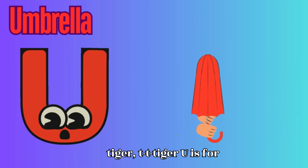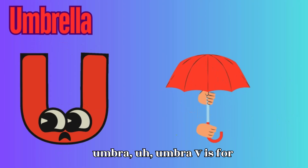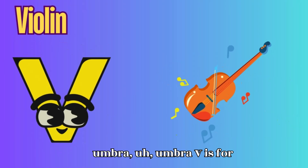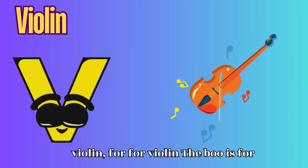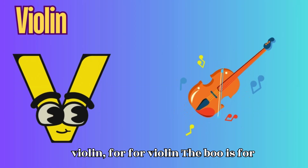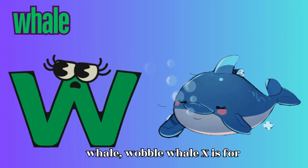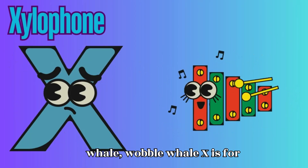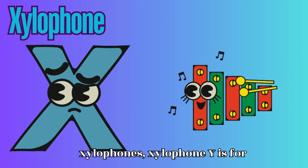T is for Tiger. T-T-Tiger. U is for Umbrella. U-U-Umbrella. V is for Violin. V-V-Violin. W is for Whale. W-W-Whale.